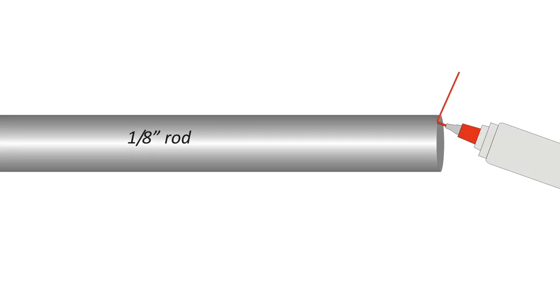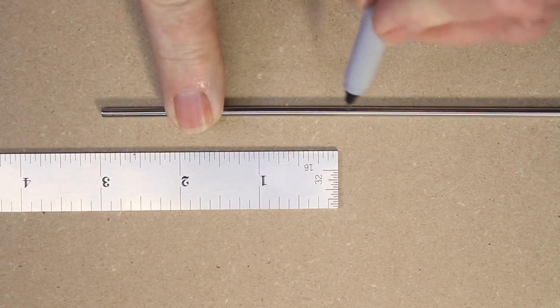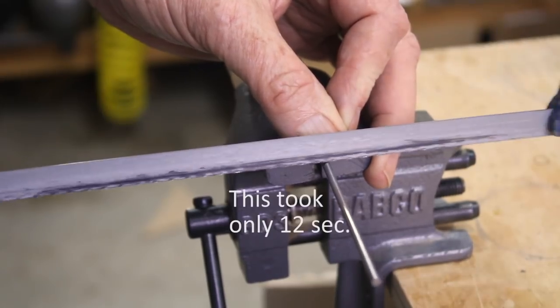First, we take our 1 8th inch blank and file the end off at an angle to create a skewed edge. How much of an angle is entirely up to you. Next, we will rotate the blank 90 degrees and file a tapered flat on both sides to create a chisel point. I typically make these flat sides about 3 quarters of an inch long, although there's no magic to that measurement. Mark a piece 3 inches in length and cut it with a hacksaw.